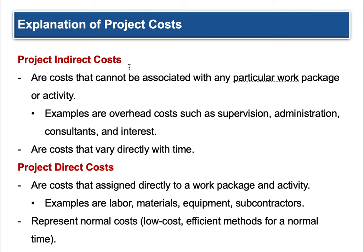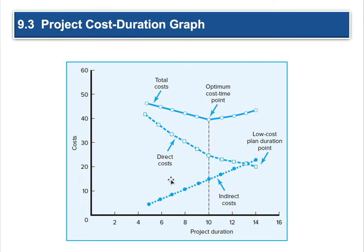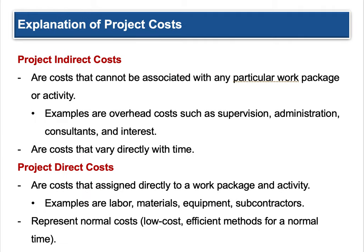You've got costs that aren't tied directly to the project and costs that are. Either way, whether indirect or direct, you're going to have an optimum point where you need to wrap up this project before costs start going back up. And a lot of times that's driven by indirect costs. As a project manager, your direct costs are getting lower — you're doing a great job — but because of things out of your control, the indirect costs mean you need to wrap up the project sooner. You need to crash it.